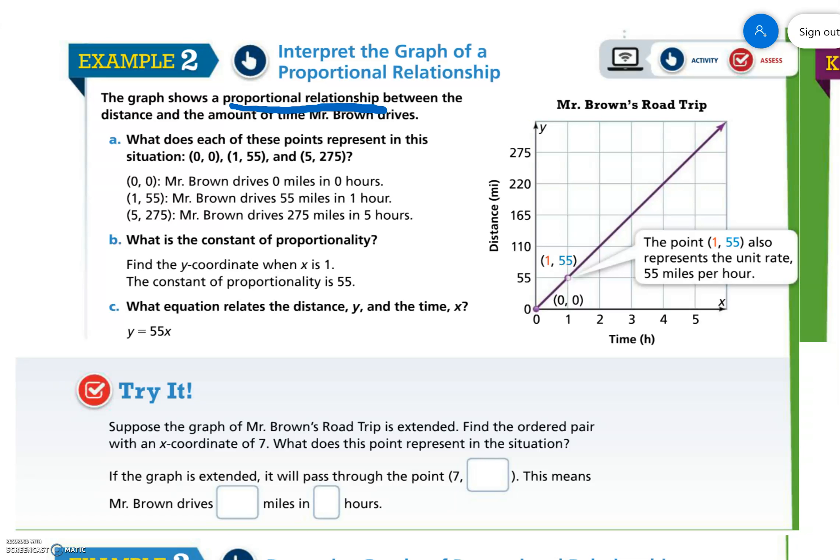Between the distance and the amount of time Mr. Brown drives. What does each of these points represent in the situation? (0,0). Well, we have to read the labels. We've got time and distance. So (0,0), Mr. Brown drives zero miles in zero hours.